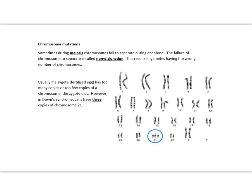Down syndrome, with three copies of chromosome 21, is one of those exceptions.